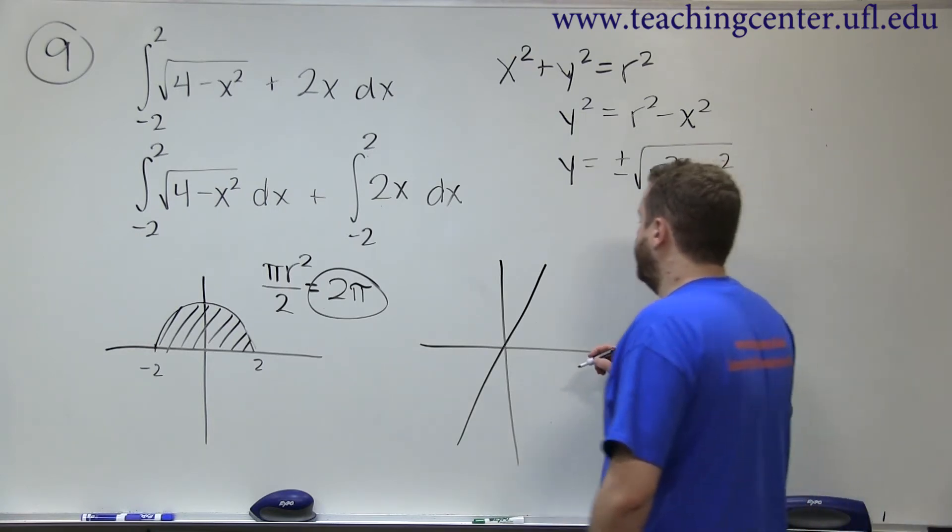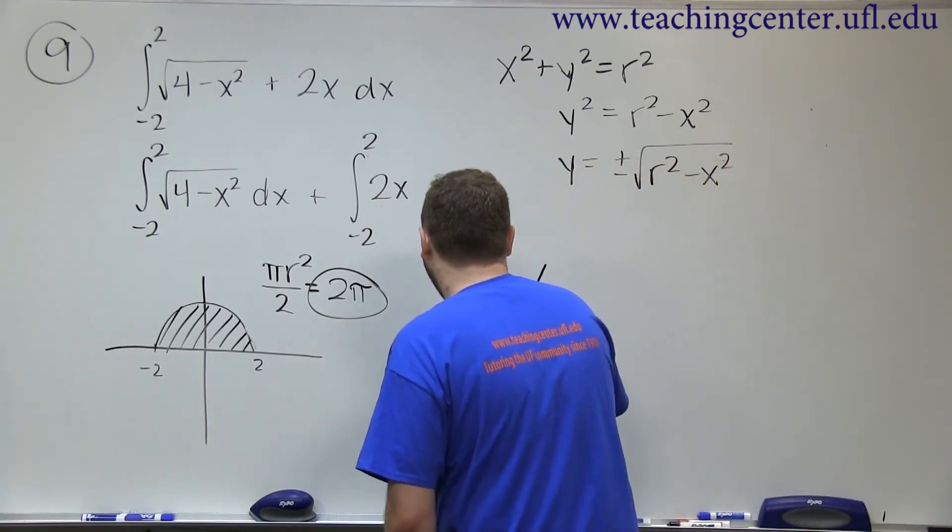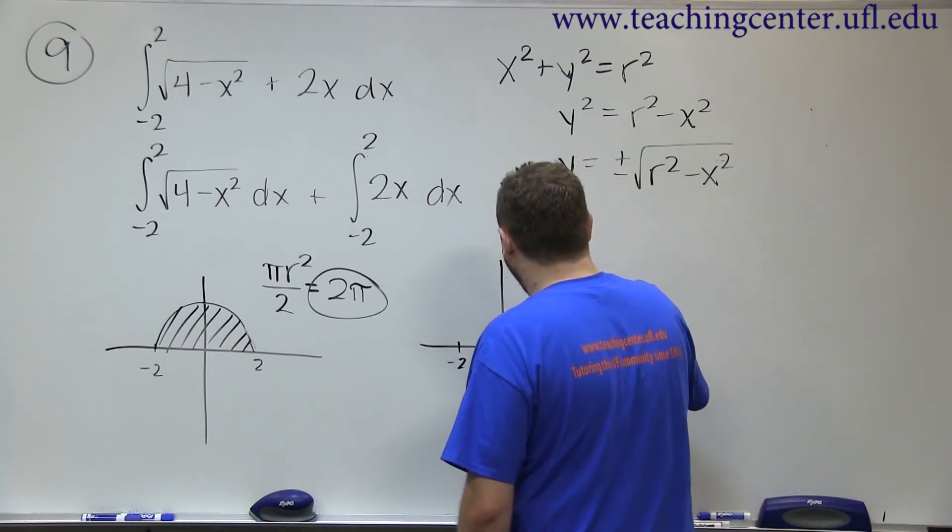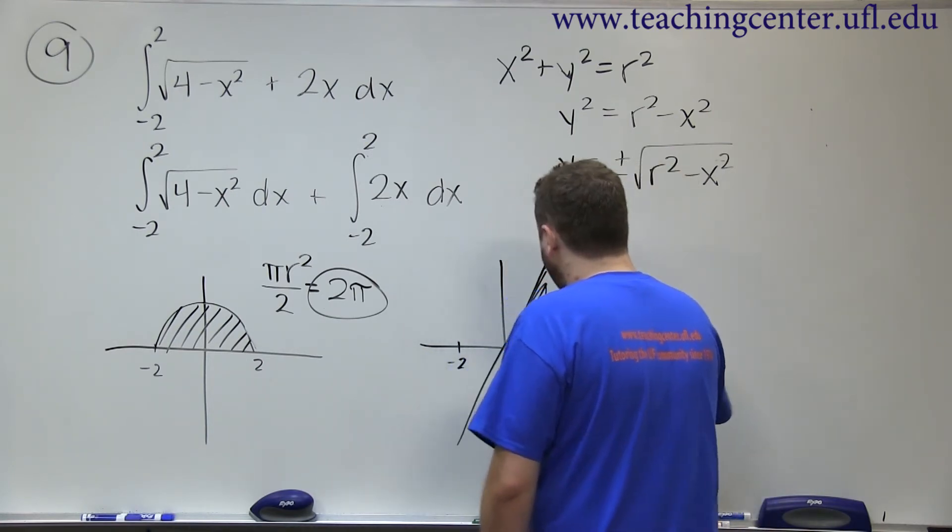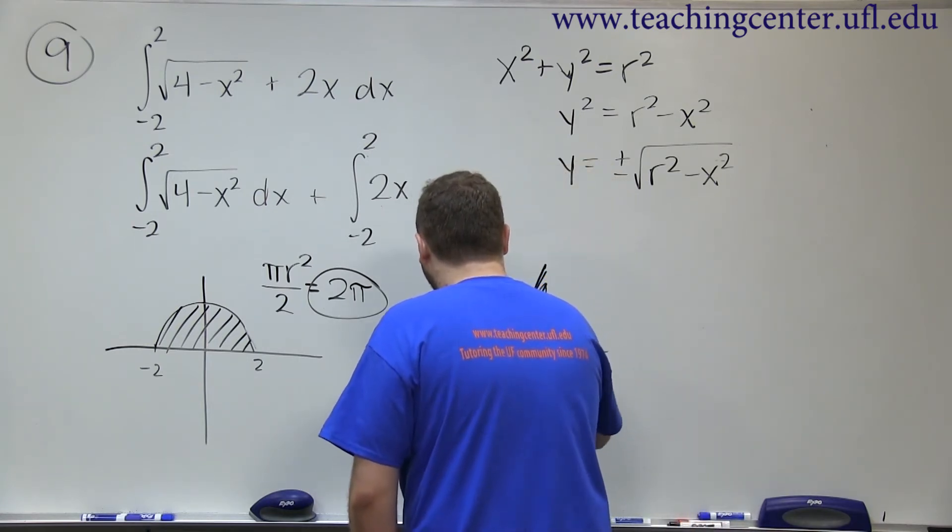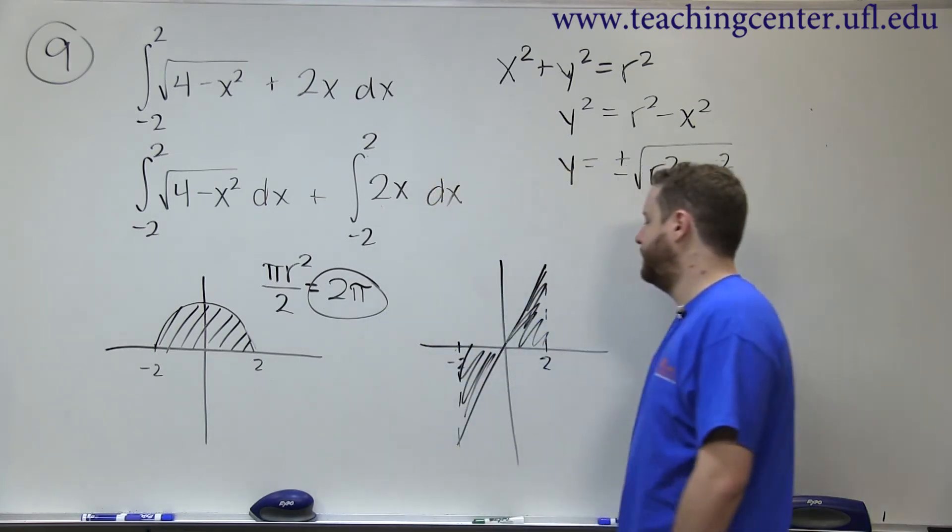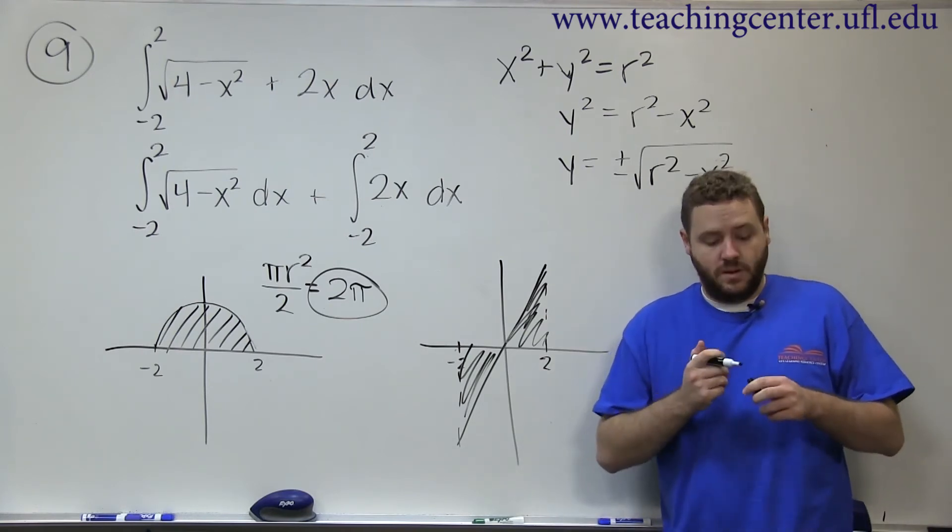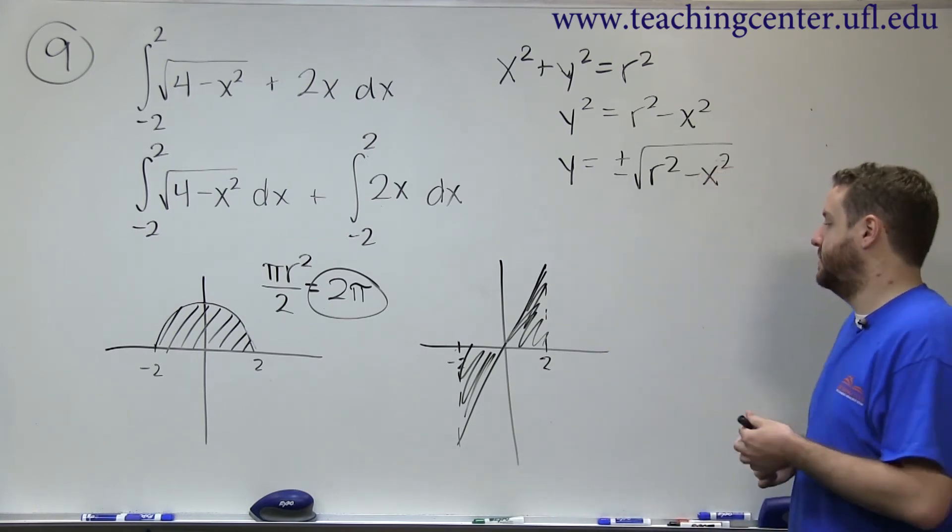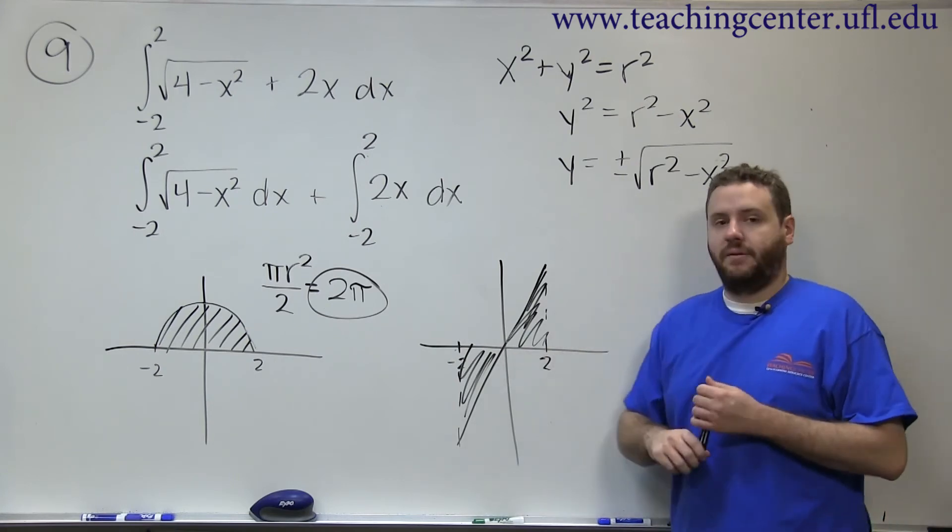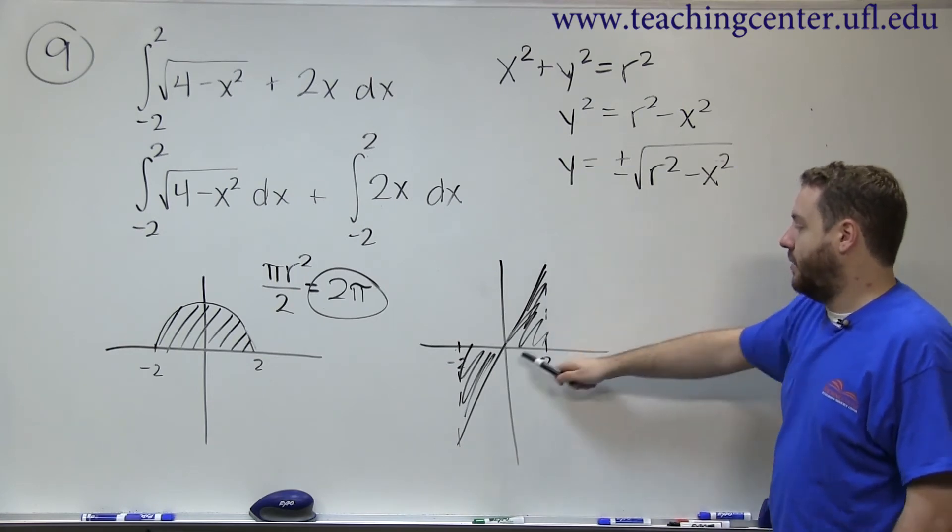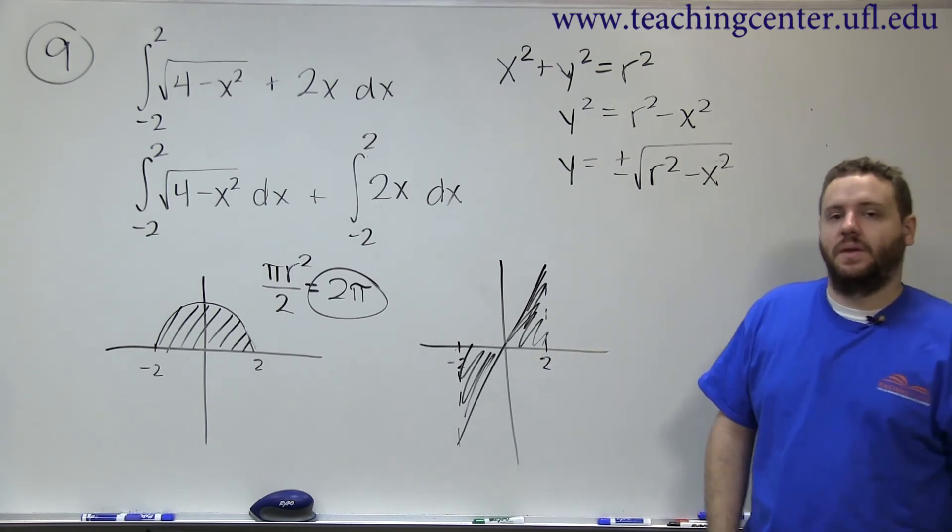So if you were doing the definite integral from negative 2 to 2, what you would be doing is you'd be finding the area between the curve and the x-axis. So really what you have are a couple of triangles, and the area of a triangle is base times height times half. In this case, since it's a slope of 2x, the height is 4 while the base is 2.